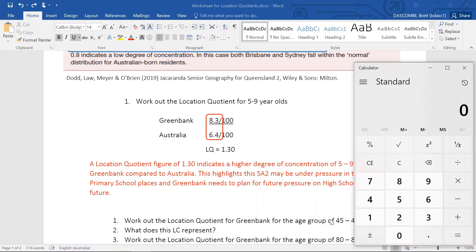Now I've got my calculator here, and what I'm going to do is go 8.3 divided by 100 equals 0.083. Now I know that 6.4 is going to be 0.064, equals, and we get a location quotient of 1.29.